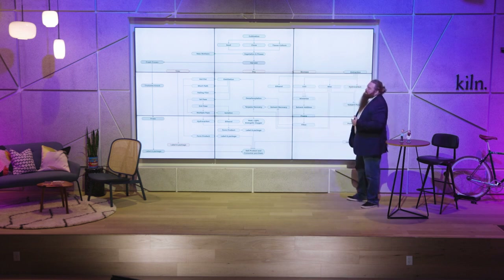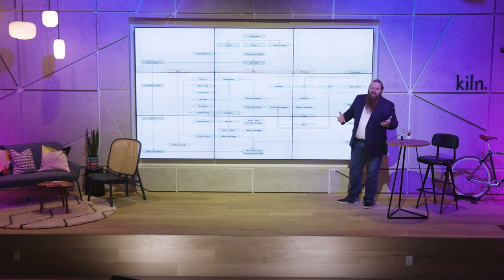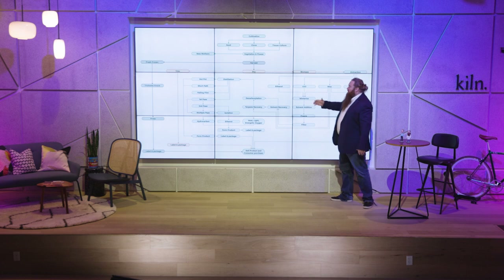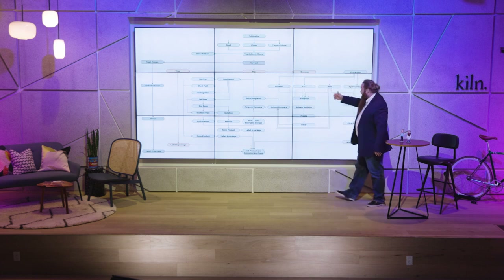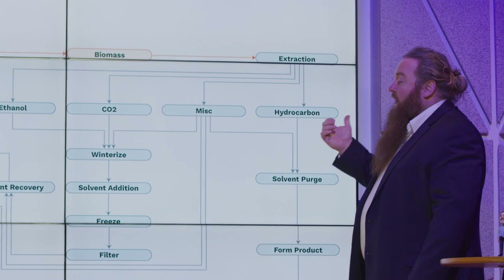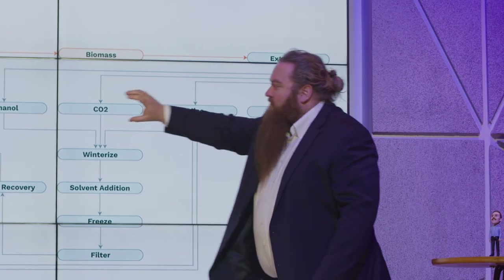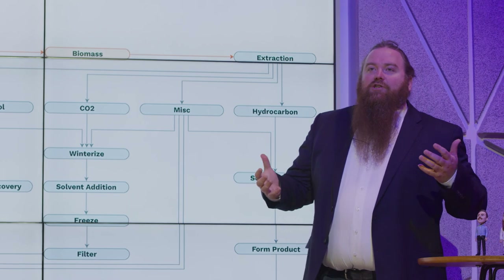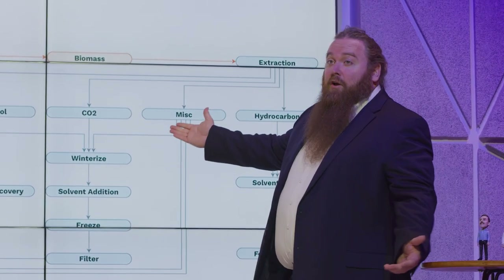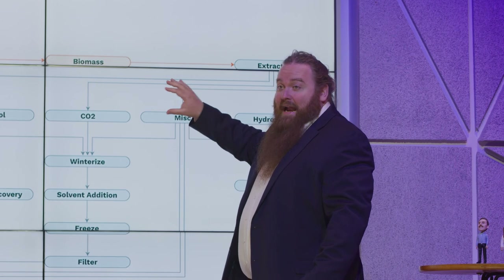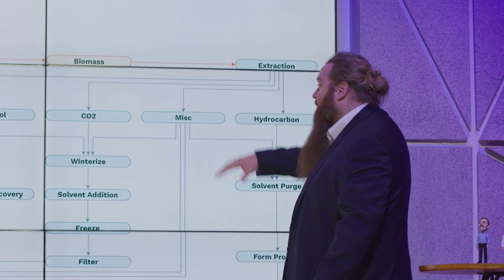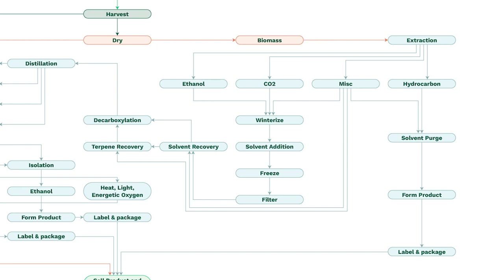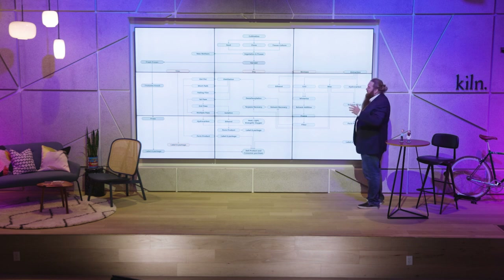That's just the traditional way — it doesn't have to be that way. You can make a dab or a wax from ethanol or CO2 just as you can from hydrocarbon. One key point: no matter what extraction technique you use, it needs to be clean. Especially in Utah for medical patients, this needs to be clean — you need to remove whatever solvent you put in. With hydrocarbon you do a solvent purge, then form your product — wax, butter, or whatever — then label and package.